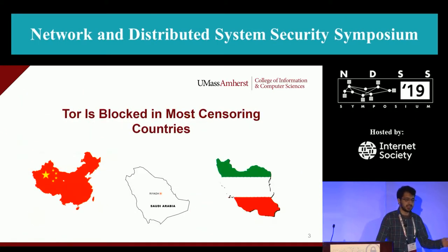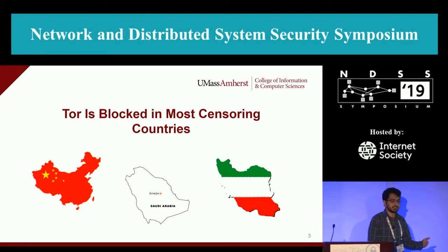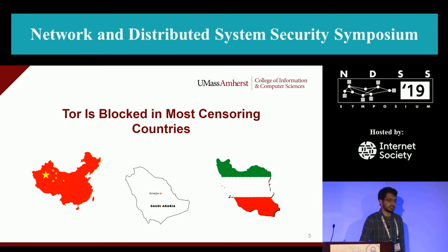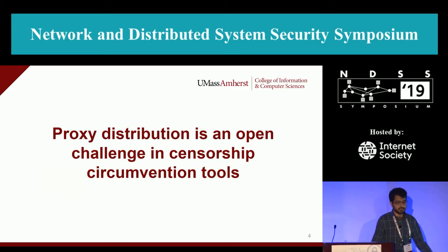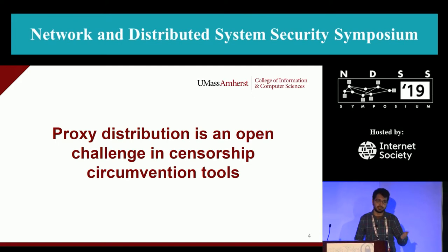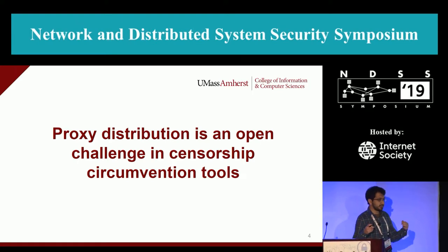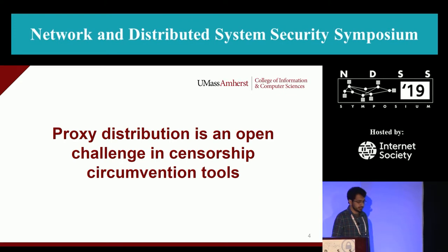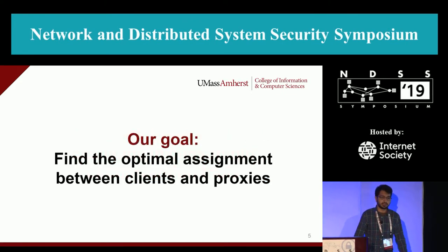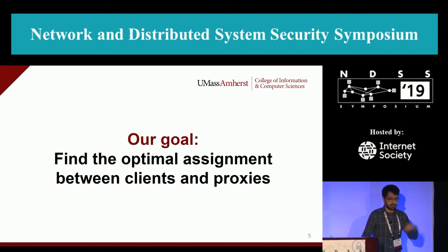In the real world, we already saw that many of these censorship circumvention tools are already blocked by censoring countries and their citizens cannot easily get access to these contents. So the main problem within all of these censorship tools is proxy distribution — how we can assign proxies to users in a way that if a user is a censoring agent, they cannot get access to a good proxy. Our goal in this work is to find the optimal way of assigning these proxies to the clients.